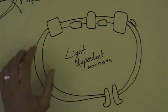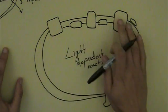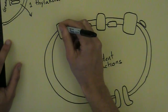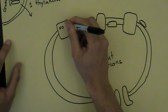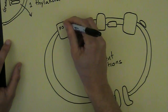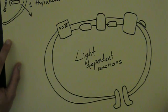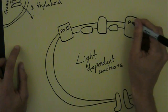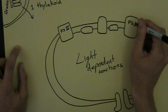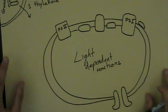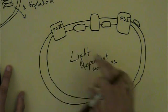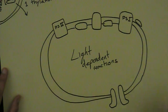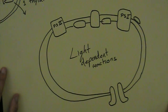So what happens in the light-dependent reactions? Well, we've got two photosystems. These are complexes made up of multiple chlorophyll molecules. And the first one, rather bizarrely, is called photosystem II. So I've just written PS2 there. And then we have photosystem I. If I remember correctly, the reason for this is photosystem I was discovered first, and then photosystem II. So that's why they're named in that order. But photosystem II is where things start out.